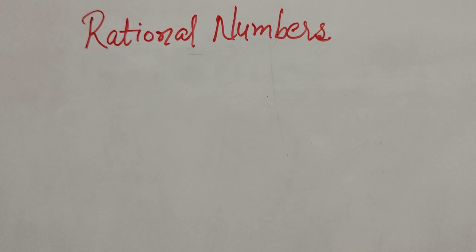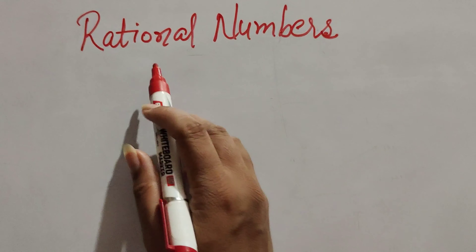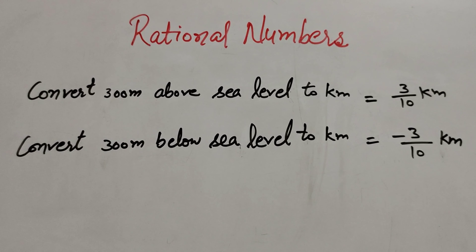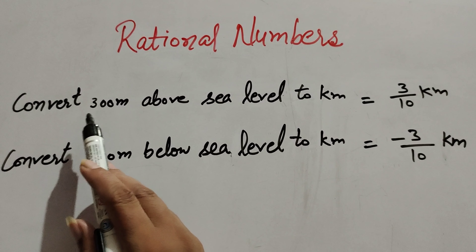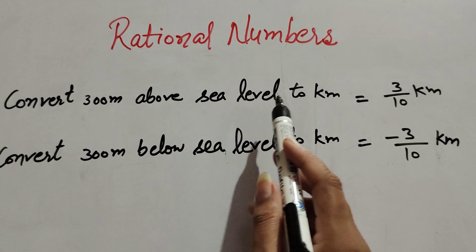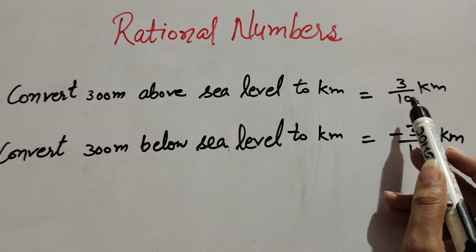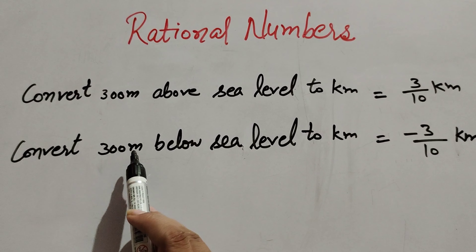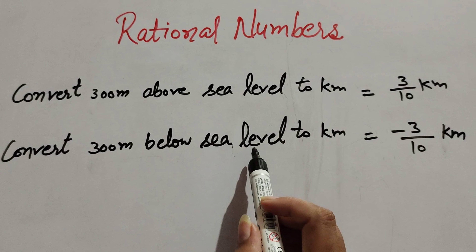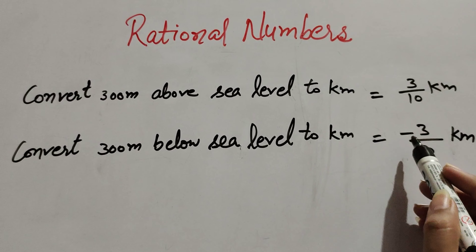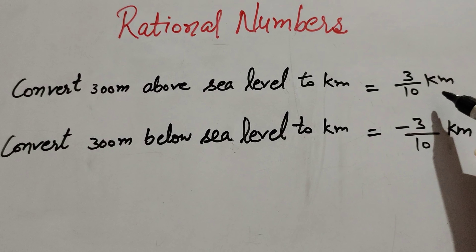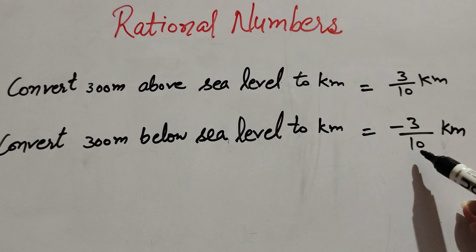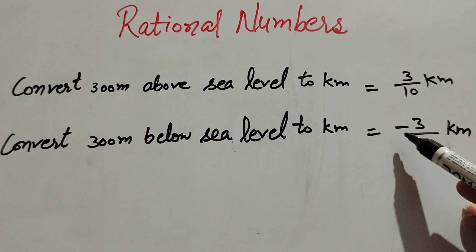Hello friends, welcome to my channel. In this video we discuss rational numbers. Let's start with an example. When we convert 300 meters above sea level to kilometers, it equals 3 over 10 kilometer. When we convert 300 meters below sea level to kilometers, it equals minus 3 over 10 kilometer. Here, 3 over 10 is a fraction, but minus 3 over 10 is not a fraction because there is a minus sign.